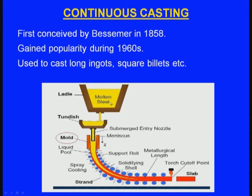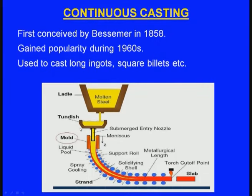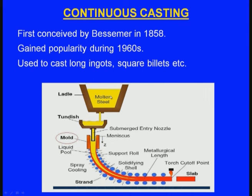This is the simple principle of continuous casting. Here is the ladle, in which there will be molten steel or some other molten metal. Here there is a tundish, which is a reservoir of the molten metal. Below the tundish there is a water-cooled mould. From the ladle, the molten metal will be poured into the tundish, and from the tundish it will be passing through the mould, where there will be a cooling system and it will be cooled down.